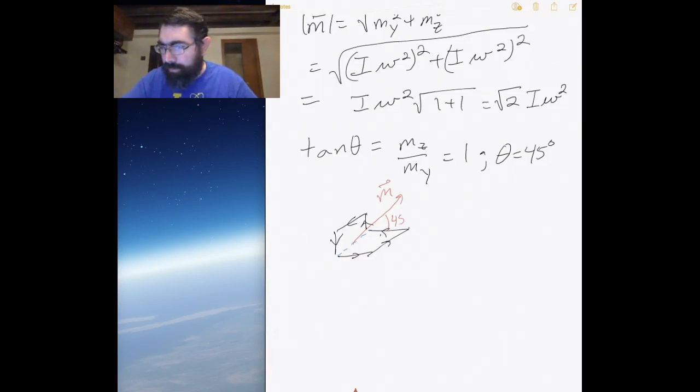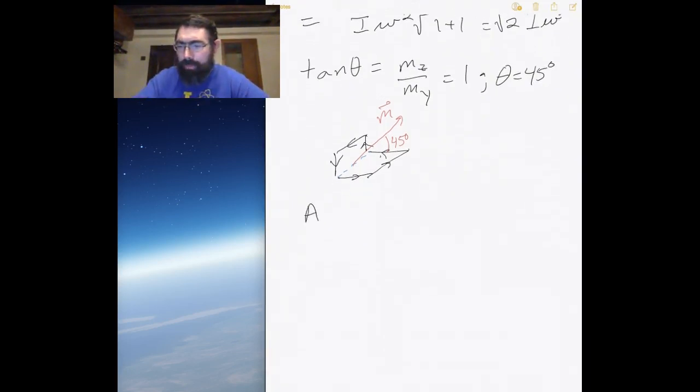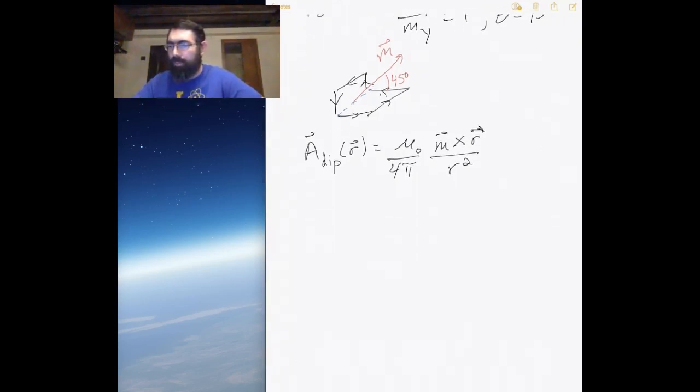If I draw the picture again, the magnetic moment would essentially be pointing at an angle of 45 degrees. So what happens then if we were to include this into our formula for the magnetic potential?